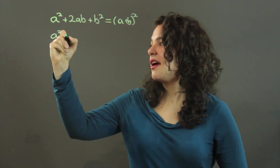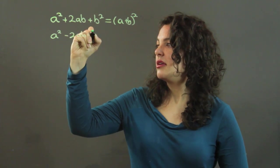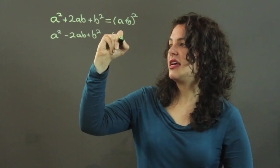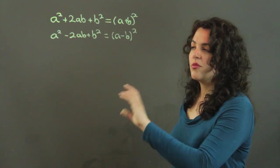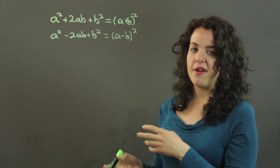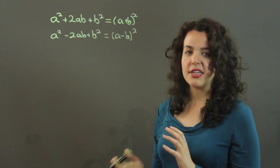Another one that we have is a squared minus 2ab plus b squared, and that factors to a minus b all squared. So again, when you can identify that you have a perfect square trinomial, it takes you just a second to factor it.